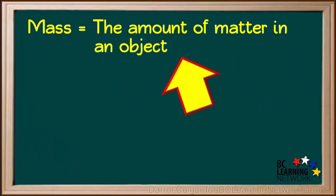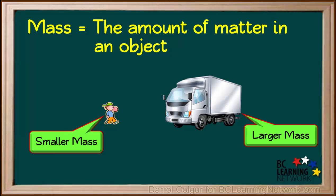Mass is the amount of matter in an object. If we compare a small boy and a semi-truck, the truck contains more matter than the boy, so the truck has a larger mass than the boy.